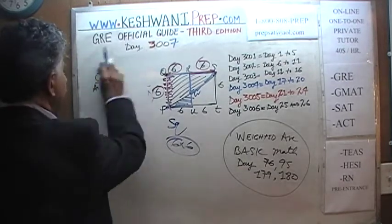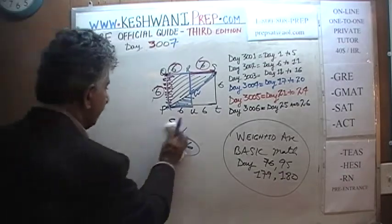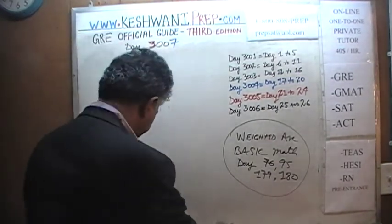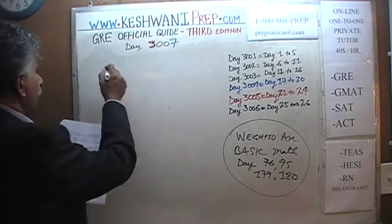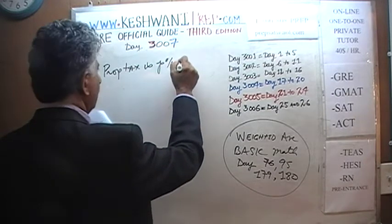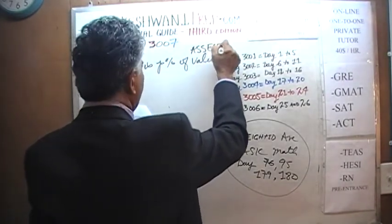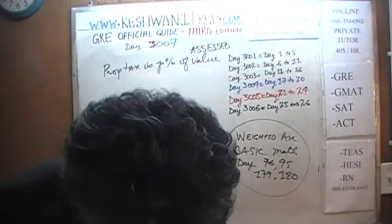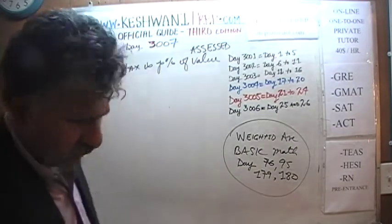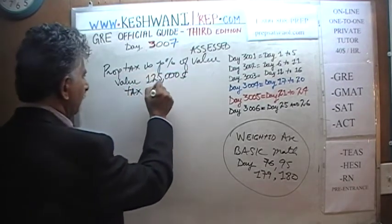Number 3 — we're talking about a property tax. It's P percent of the assessed value. We are further told that the tax in 2009 on a home valued at $125,000 was $2,500.